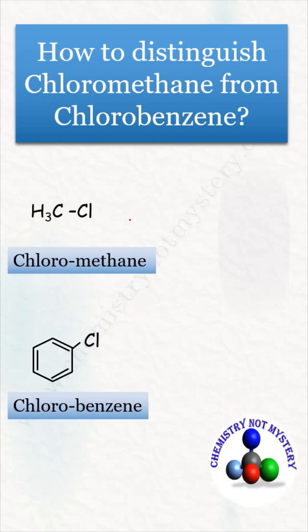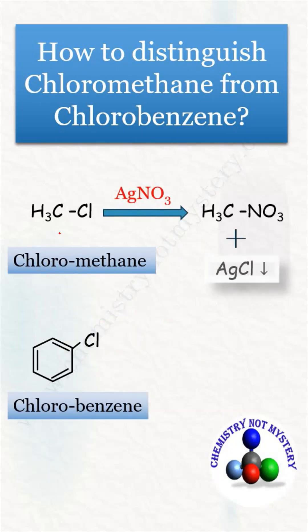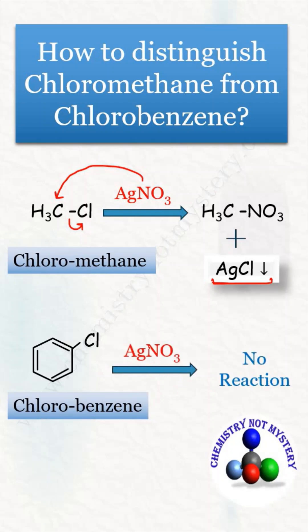When chloromethane reacts with silver nitrate, it undergoes nucleophilic substitution reaction — the nitrate attacks the carbon and expels the chlorine in the form of chloride ion, which combines with silver, and that's how silver chloride gets precipitated as a white precipitate. Chlorobenzene doesn't give any reaction with silver nitrate. That's how you can distinguish chloromethane from chlorobenzene.